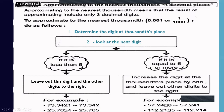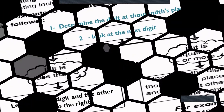Example: 112.2135. The thousandths digit is 3. The next digit is 5, so increase 3 by 1 — 3 becomes 4 and cancel this digit and all to the right — approximately 112.214.